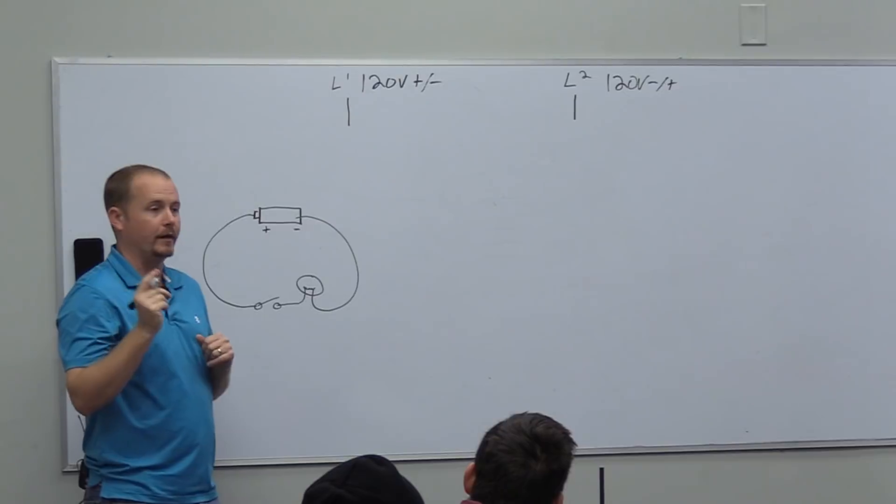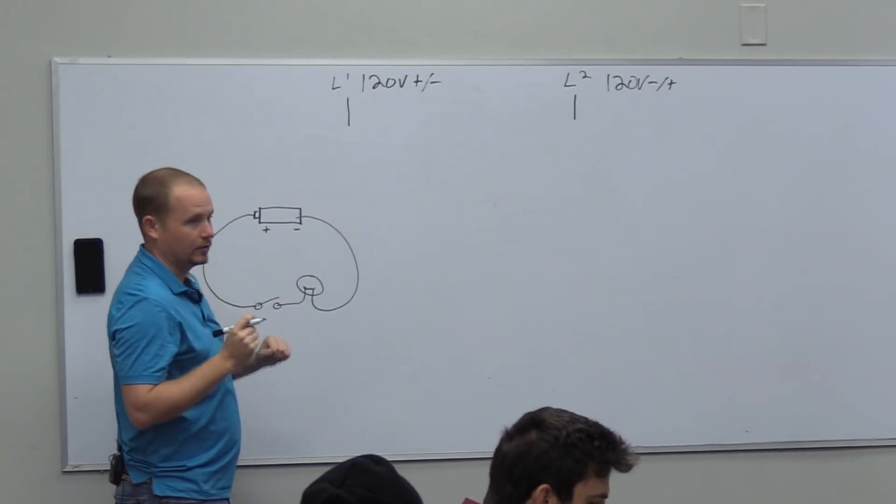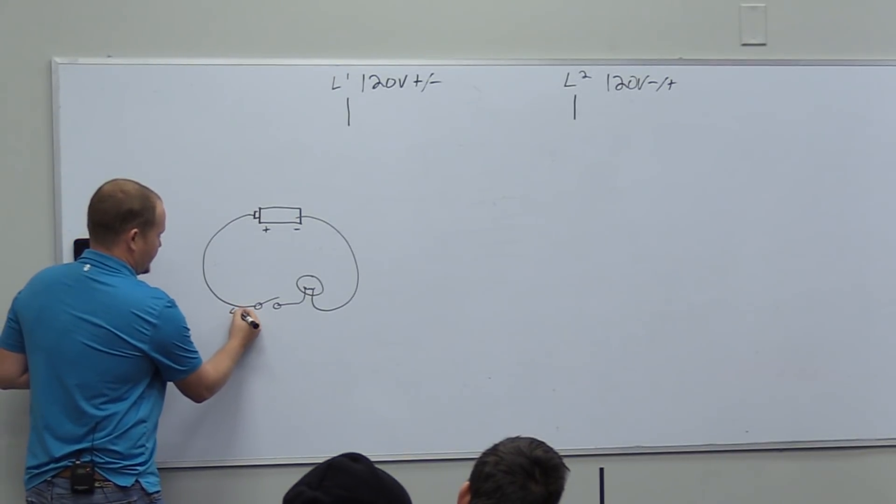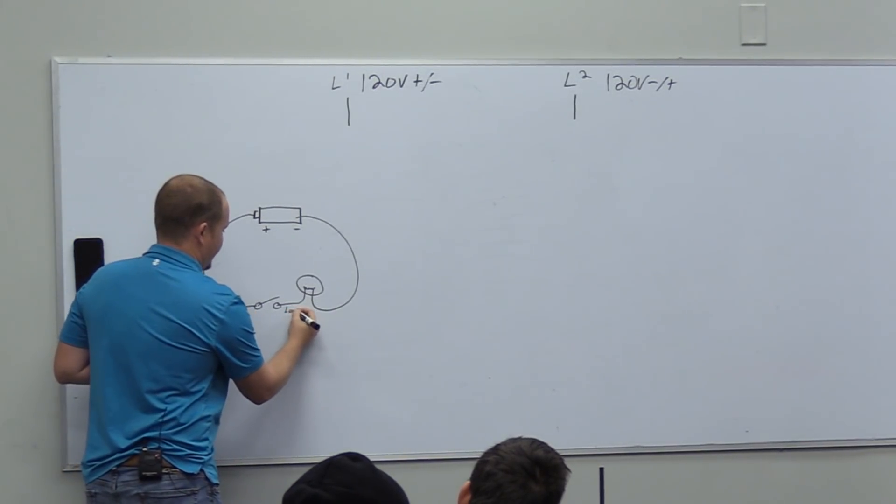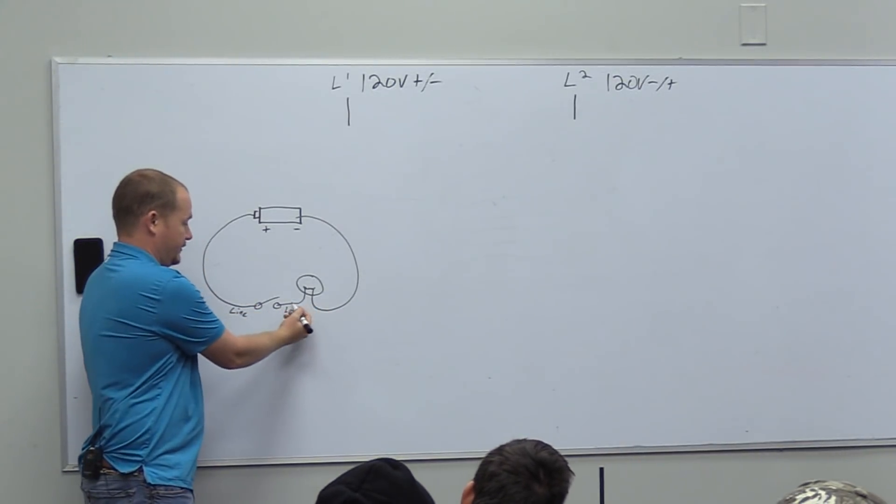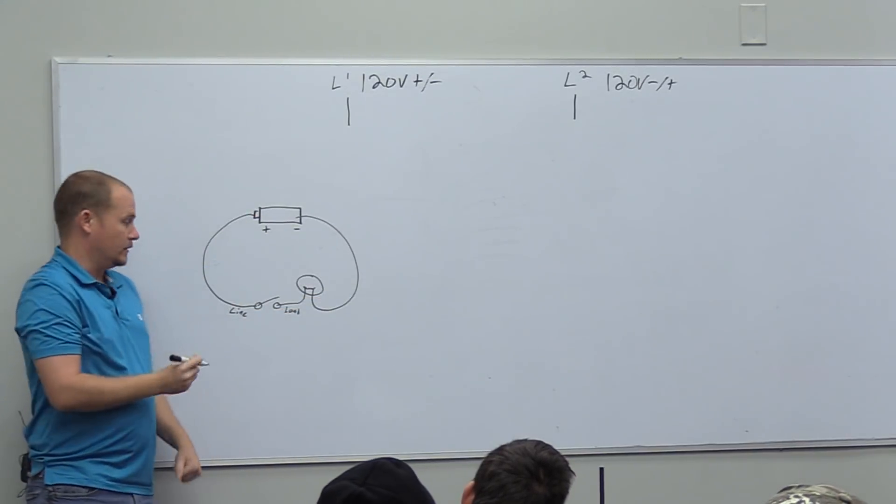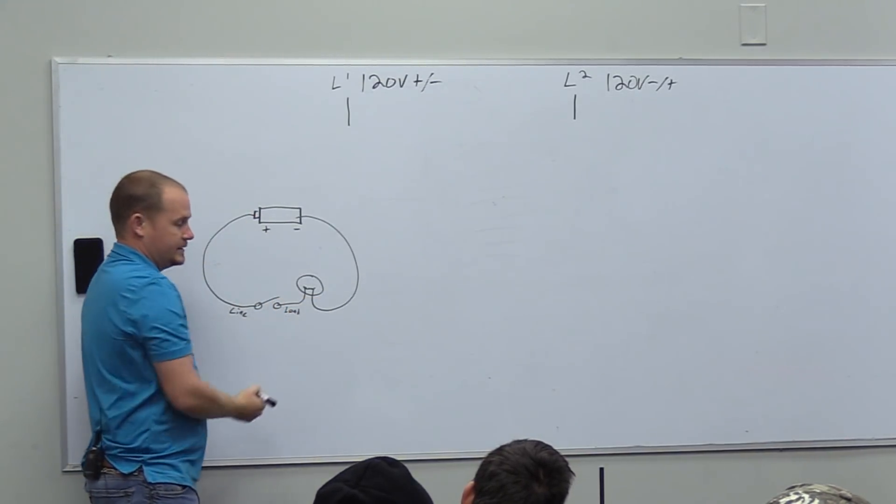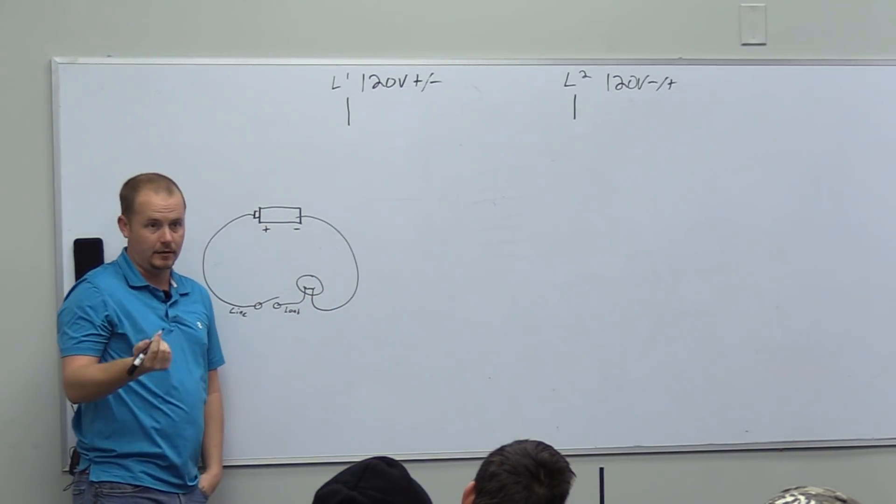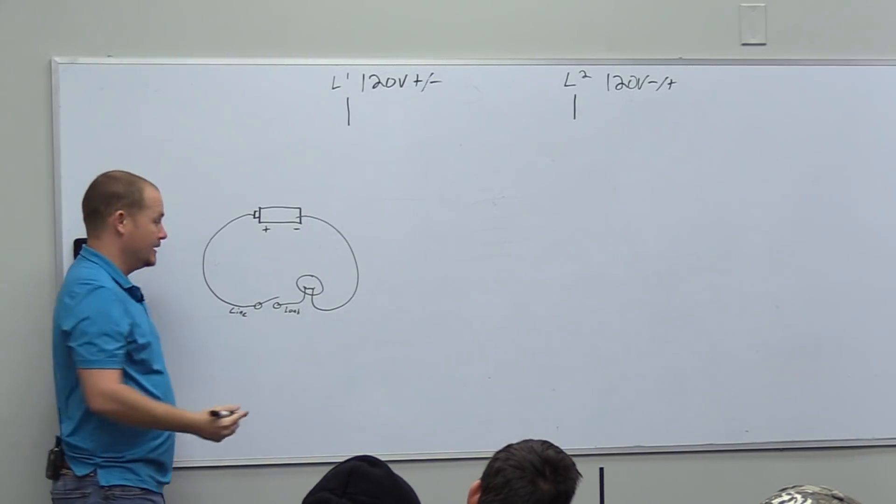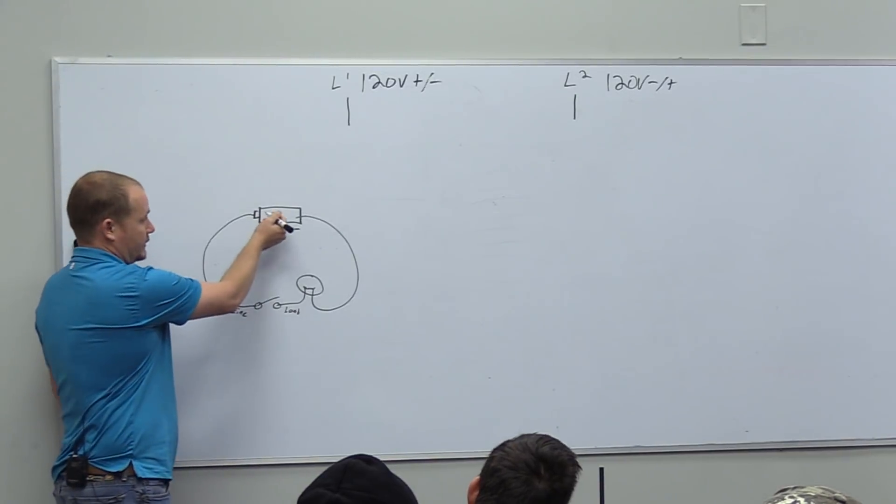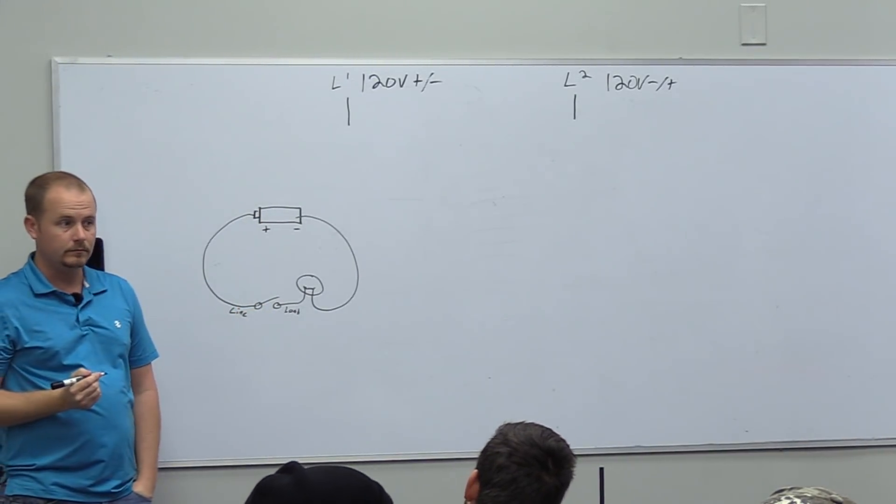We're going to help organize this even a little bit further. We have what we call line and load sides of a switch. This is the line side of a switch going in, and load side of the switch coming out. The load side of a switch is the conductor that's in between the switch and the load—thus, load side. The line side is the power coming in, or the conductor between the power source and the switch.